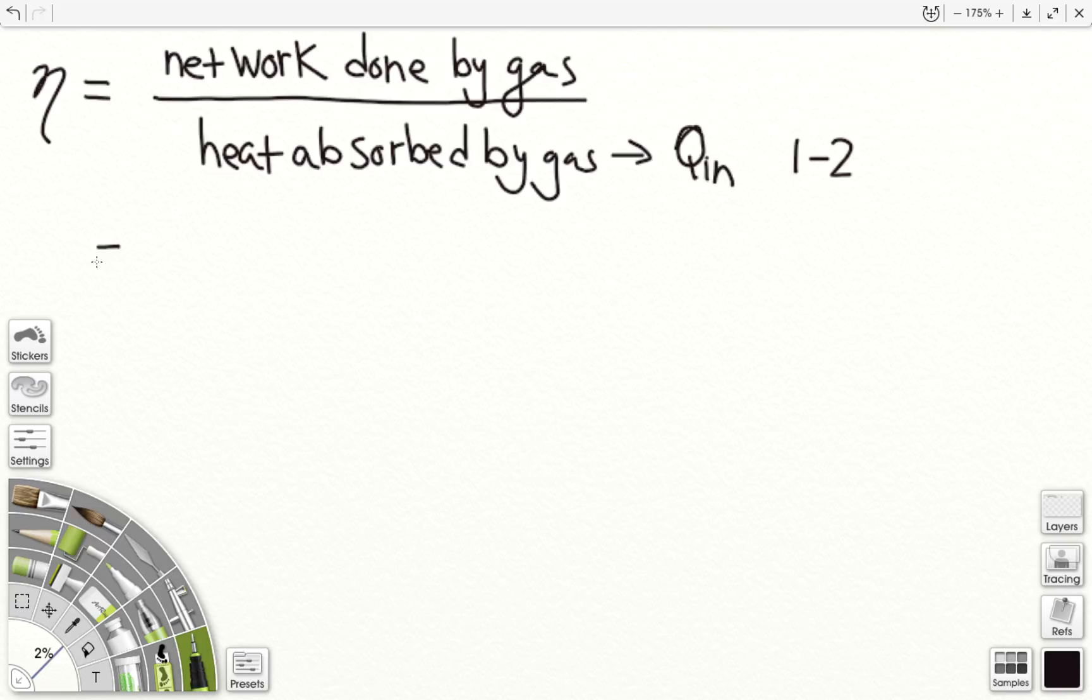And so then putting in values, the net work is a total of the work done from 1 to 2, plus the work from 2 to 3, plus the work from 3 to 4, plus the work from 4 to 1, all over our Qin.